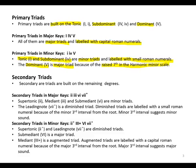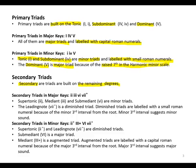Then we have secondary triads. Secondary triads are built on the remaining degrees — meaning the two, the three, the six, and the seven. In major keys, we have the supertonic triad which is the two, the mediant triad which is the three, and the submediant triad which is the six — and they are all minor triads.